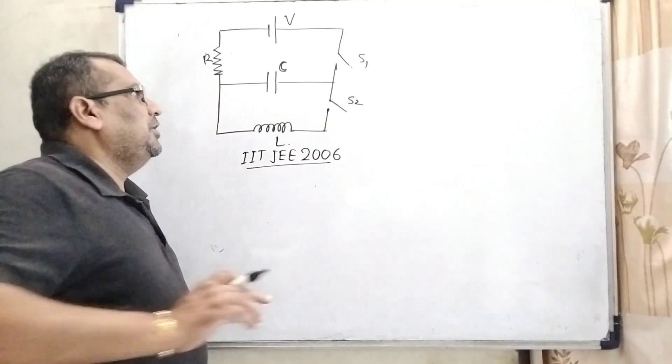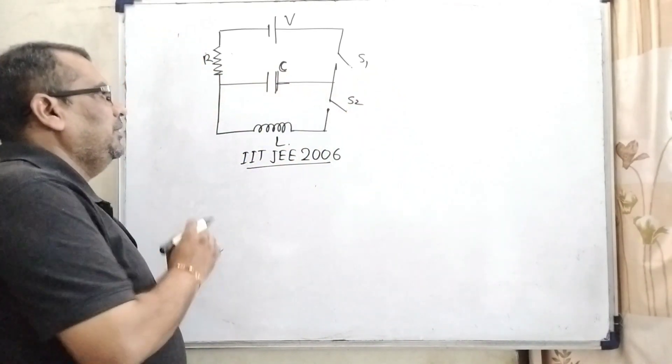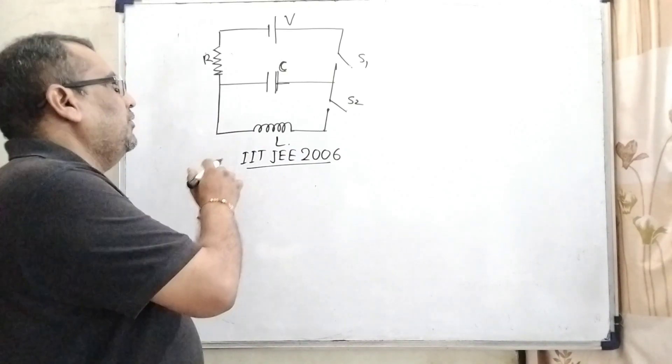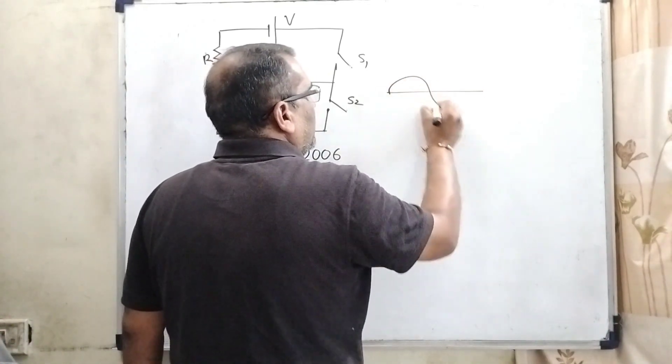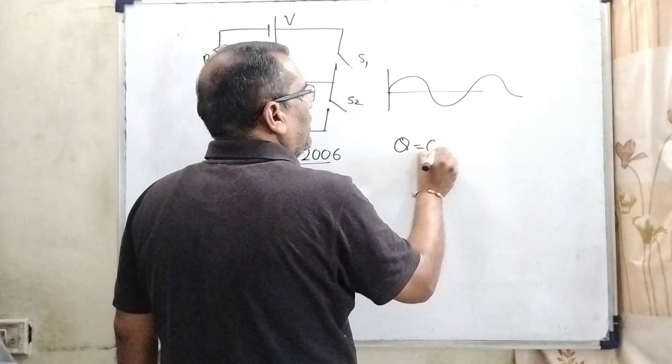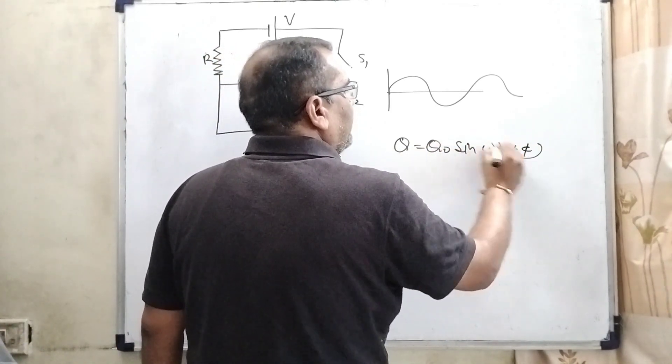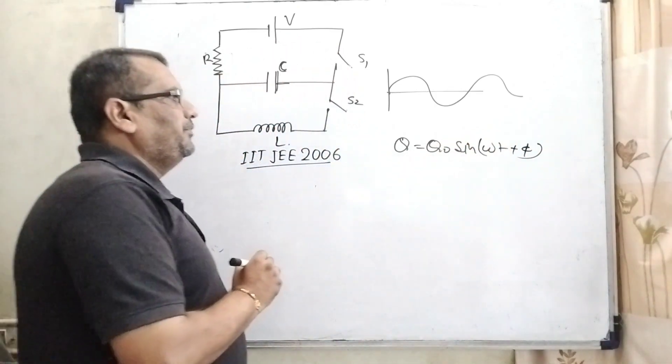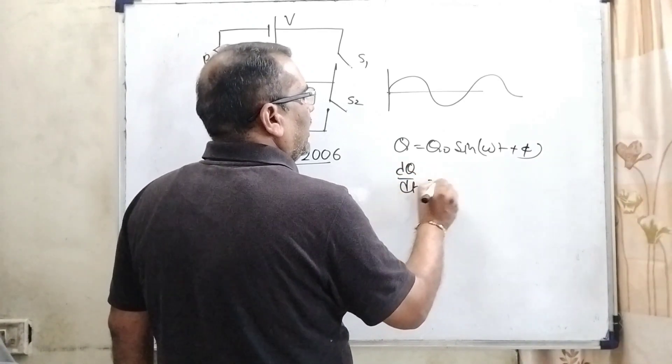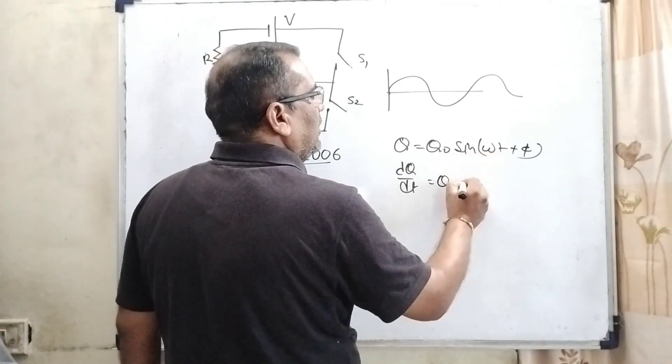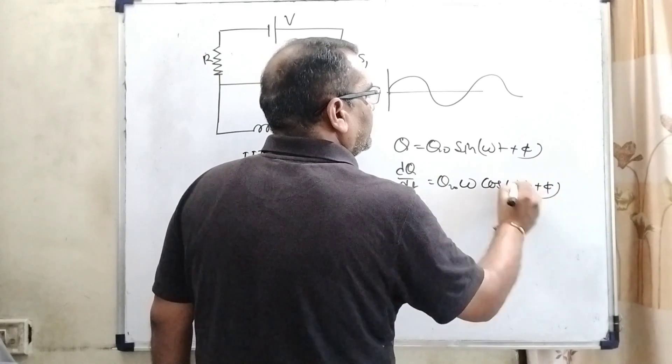Now, according to the condition here, S1 is open and S2 is closed. Now, capacitor and inductor become in series. And that time, we have to find out the maximum current. So, here we can see that sinusoidal curve is formed. So, it can be written as q equal to q0 sin(omega t plus phi). Let us consider phi is the phase difference. So, differentiate with respect to time that is dq by dt, and here q0 is constant and omega is the coefficient, so cos(omega t plus phi).